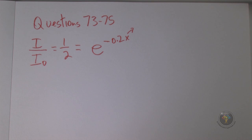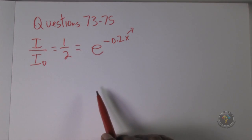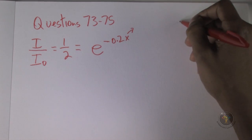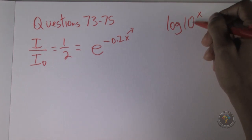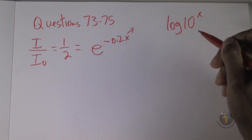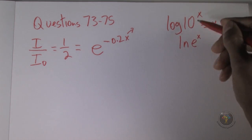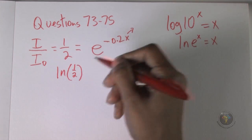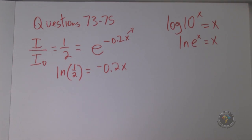To solve this, we need to get rid of e, so we take the natural logarithm of both sides. Just like log base 10 of 10^x brings x to the front and log(10)=1, the natural log of e^x equals x. Taking the natural log of both sides: ln(1/2) on the left, and the exponent −0.2x comes down on the right.